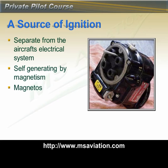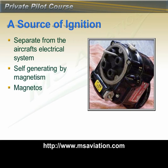A single wire wouldn't generate much electricity, so the wire is wound into a coil. The more coils, the more electricity is generated. You can also spin the magnet faster to generate more, but it's easier to simply make a bigger coil. The magneto attaches to the back side of the engine and uses the crankshaft through gearing to spin it.